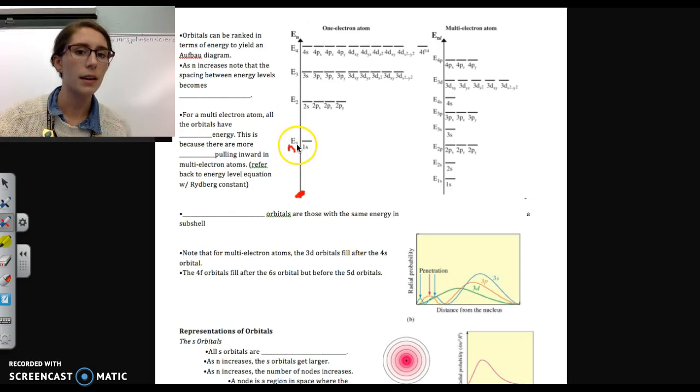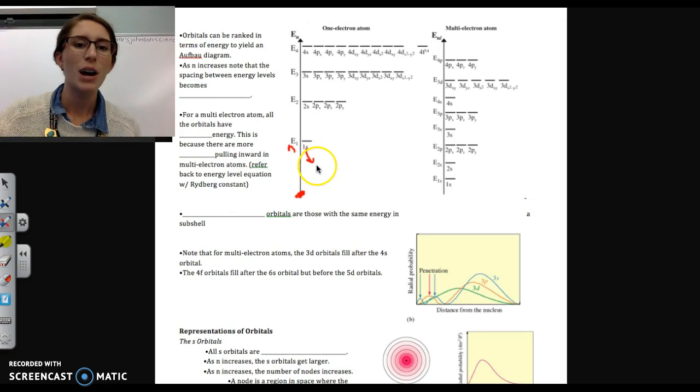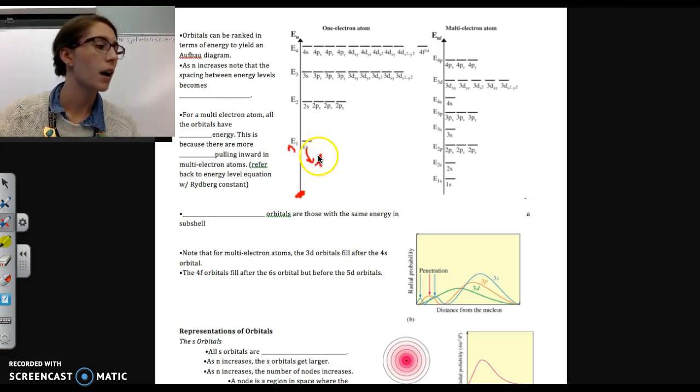What we see in energy level 1 is this 1s. What 1s represents is the second quantum number, which is L, right? And that's the angular momentum quantum number, and that tells us the shape of an orbital, or the orbital type. And in this case, L equals zero, when we're in energy level 1, that's telling us we're in an s orbital.